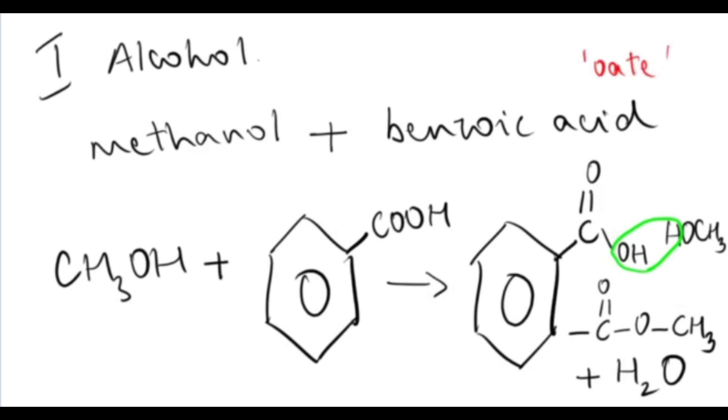If you remember, I told you it ends with -oate. So first you have to start with the alcohol. The alcohol was methanol, so you'll have methyl. And then the acid was benzoic acid, you'll have benzoate. Methyl benzoate is the name of this ester.